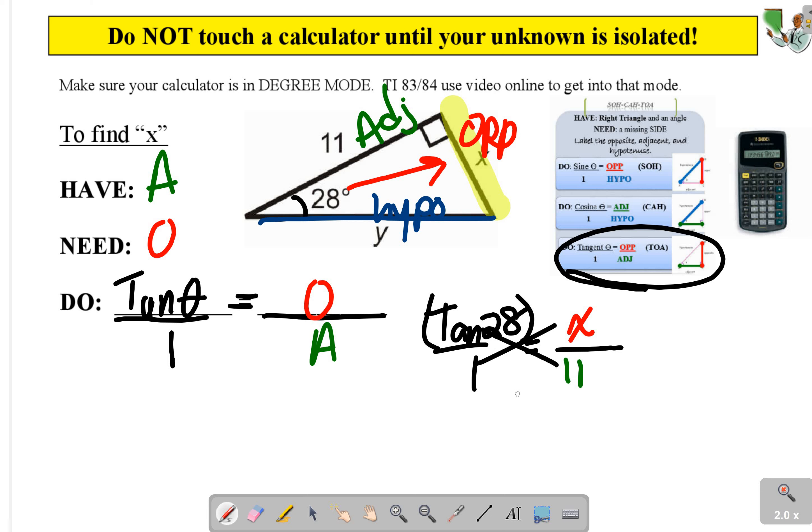Again, you don't touch a calculator until your variable is by itself. So I have x equals tangent 28 times 11. Then you get your calculators out. Let me show you.